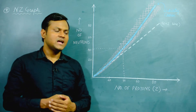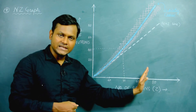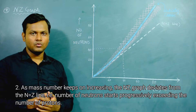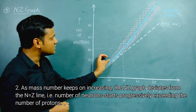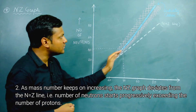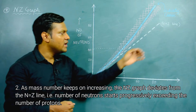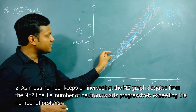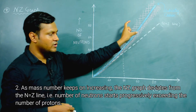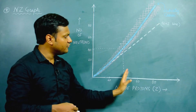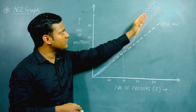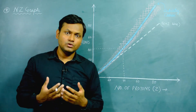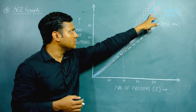The second observation is that as mass number keeps increasing, the number of neutrons starts exceeding the number of protons. This is why the stability curve starts deviating from the N equals Z line. As mass number progressively increases, the difference between neutron and proton counts keeps increasing. For higher mass numbers, the number of neutrons is quite large compared to the number of protons for stable nuclear configurations.